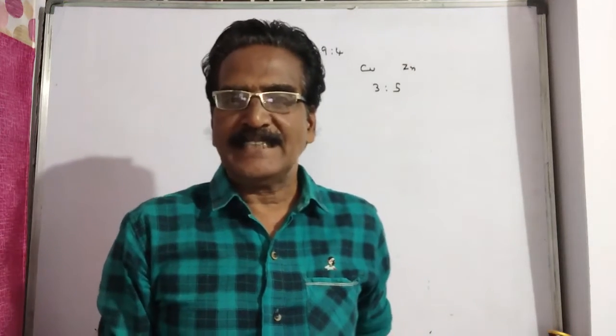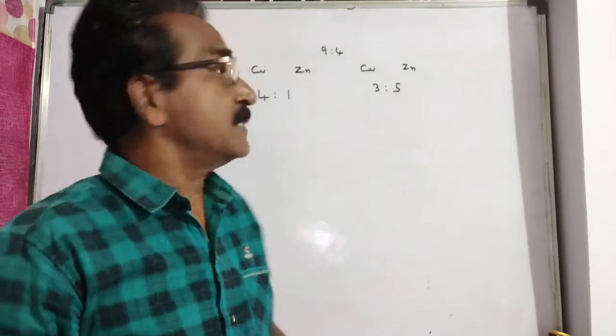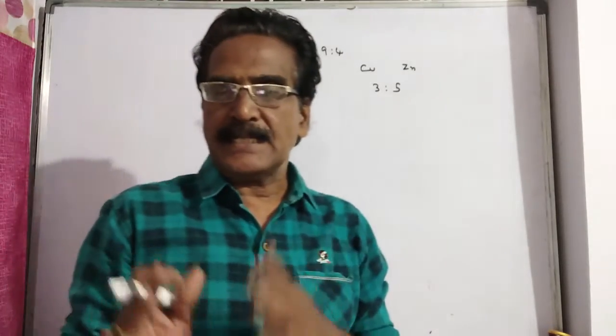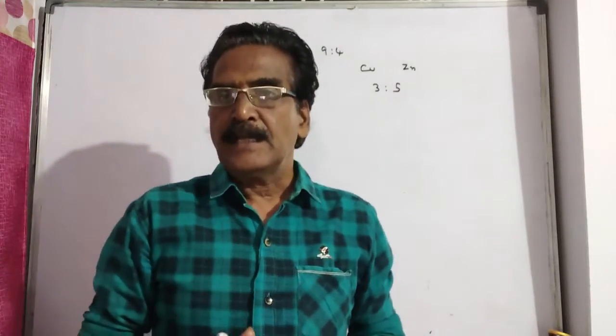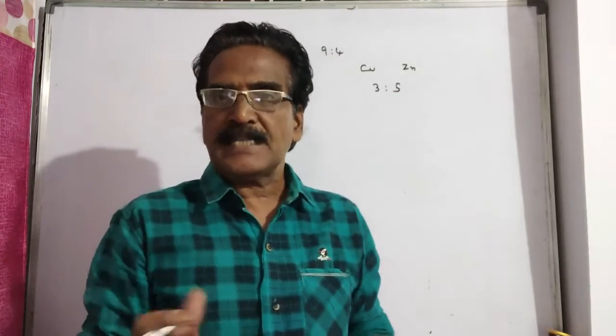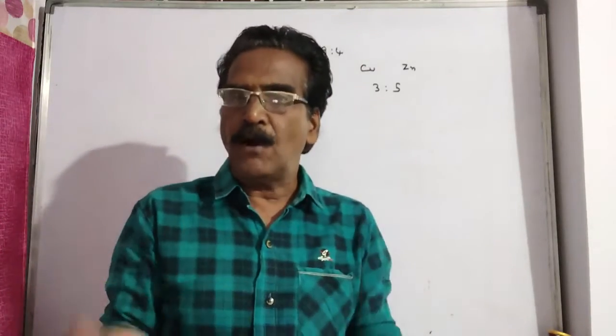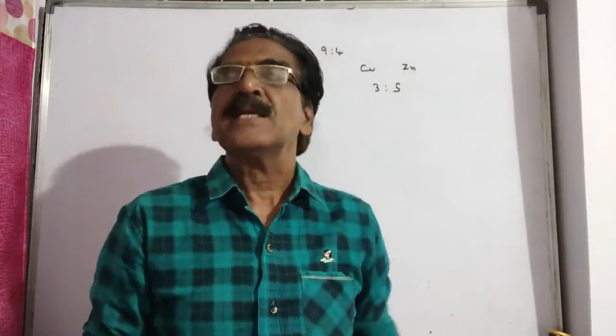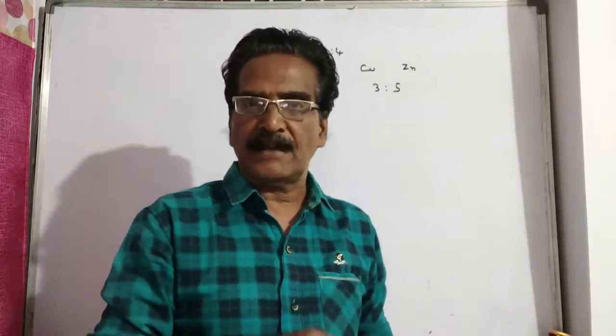Hi friends, good morning. Please look at the next problem in ratio and proportions. Two alloys contain copper and zinc in the ratio of 4 is to 1 and 3 is to 5. If these two alloys are mixed in the ratio 9 is to 4 to form a third alloy C, then what is the ratio of copper and zinc in the third alloy C?